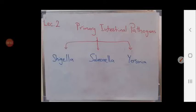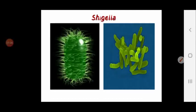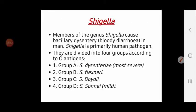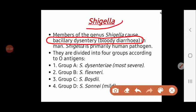Today we will discuss genus Shigella; in the next lecture we will cover genus Salmonella and genus Yersinia. Genus Salmonella can be transmitted from animals, while Shigella is the primary human pathogen. Members of genus Shigella cause bacillary dysentery — characterized by bloody diarrhea — and this is one of the differential diagnoses of bloody diarrhea.